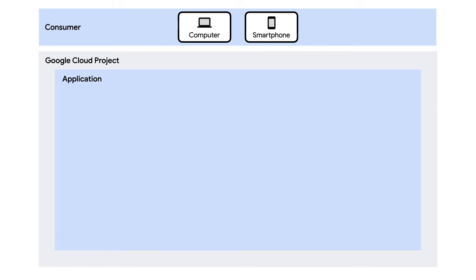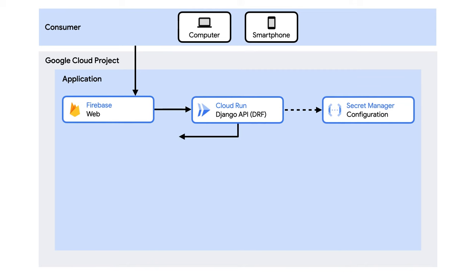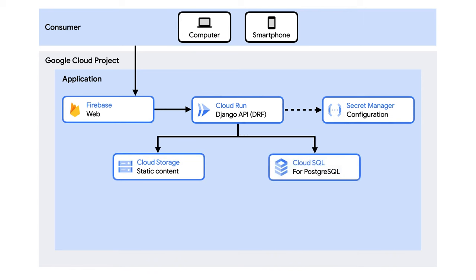The client front-end is hosted on Firebase and uses LIT and web components for client-side rendering of API data. The web client calls an API back-end running as a Cloud Run service using the Django REST framework, written in Python. Cloud Run automatically scales your infrastructure up and down as needed. Configuration and other secrets for the Python application are stored in Secret Manager. Static assets and container images are stored in Cloud Storage. Cloud SQL for Postgres is the database for the Python application.